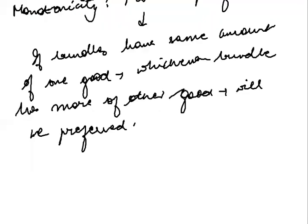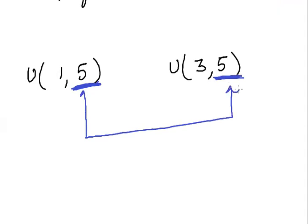So let's try and understand what this means. For example, if two bundles have same amount of one good—this also has five units of good two and this also has same five units of good two—then whichever has more of the other good will be preferred. This has three units of good one and this just has one unit of good one. Whichever has more amount of good one will be preferred. This is the concept of monotonicity.